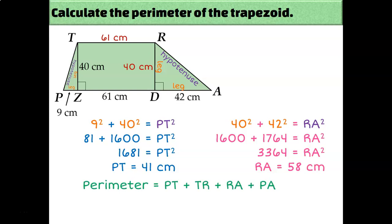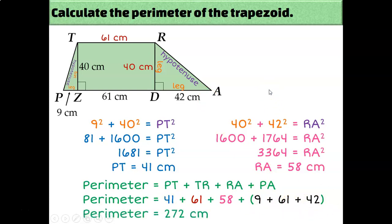So to calculate the perimeter, I need to add up all four of my side lengths. PT we calculated to be 41 centimeters. 61 we decided was the length of TR because it's opposite from this other 61 centimeter length. RA we calculated to be 58. And then PA is 9 plus 61 plus 42. So if I add all of these numbers together, I get my total perimeter of 272 centimeters.